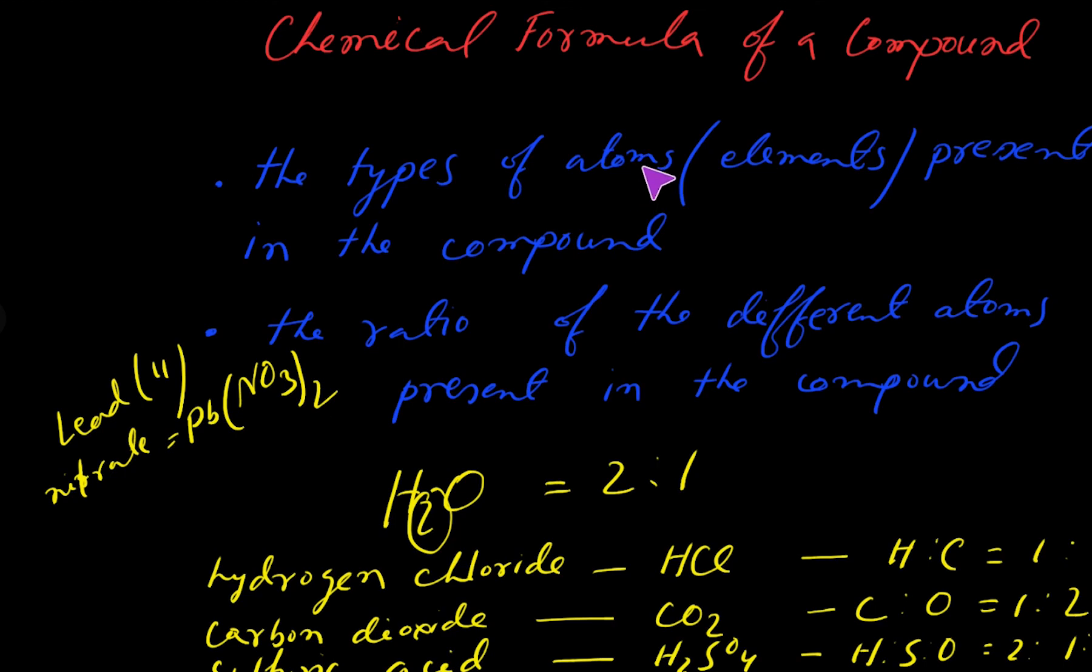Words have a fixed spelling. Changing or removing any one of the letters will give a different word altogether. Similarly, compounds have a fixed composition. Changing any one element in a compound or changing the ratio of the elements will give a different compound altogether. Bye for today.